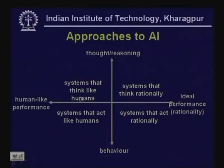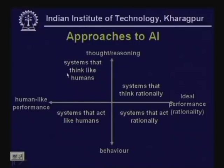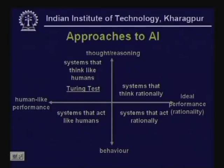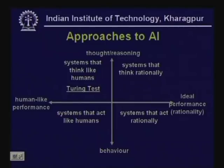The four definitions are: systems that think like humans — for example, the famous Turing test devised by Alan Turing, where a system that passes would be one that thinks like a human. The second definition is systems that think rationally, the school of thought where philosophers, mathematicians, and computer scientists have worked on logic and laws of thought.